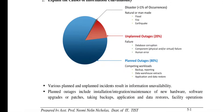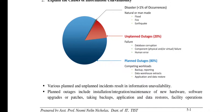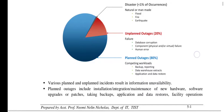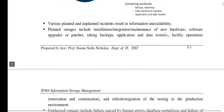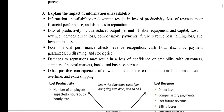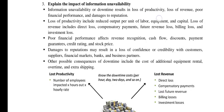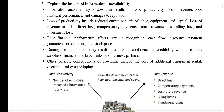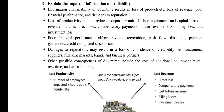The causes of information unavailability include natural disasters, unplanned outages such as power failures, and planned outages — for example, when you need to install something and must make the information unavailable for that period. The impact of information unavailability results in loss of productivity, loss of revenue, poor financial performance, and damage to reputation. The explanation is given below.